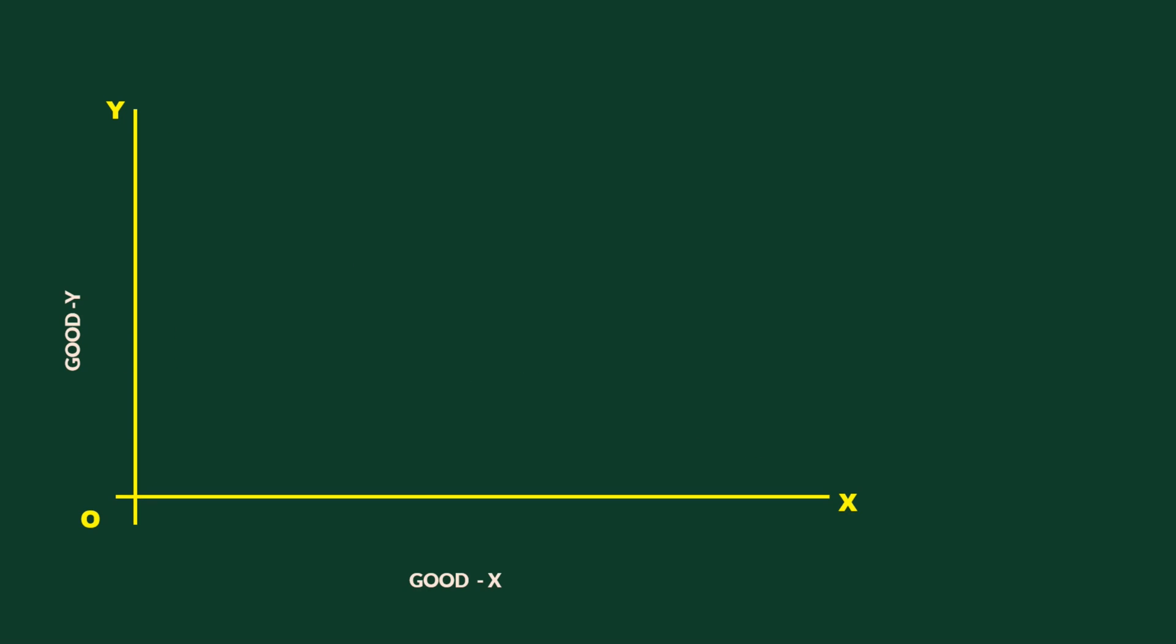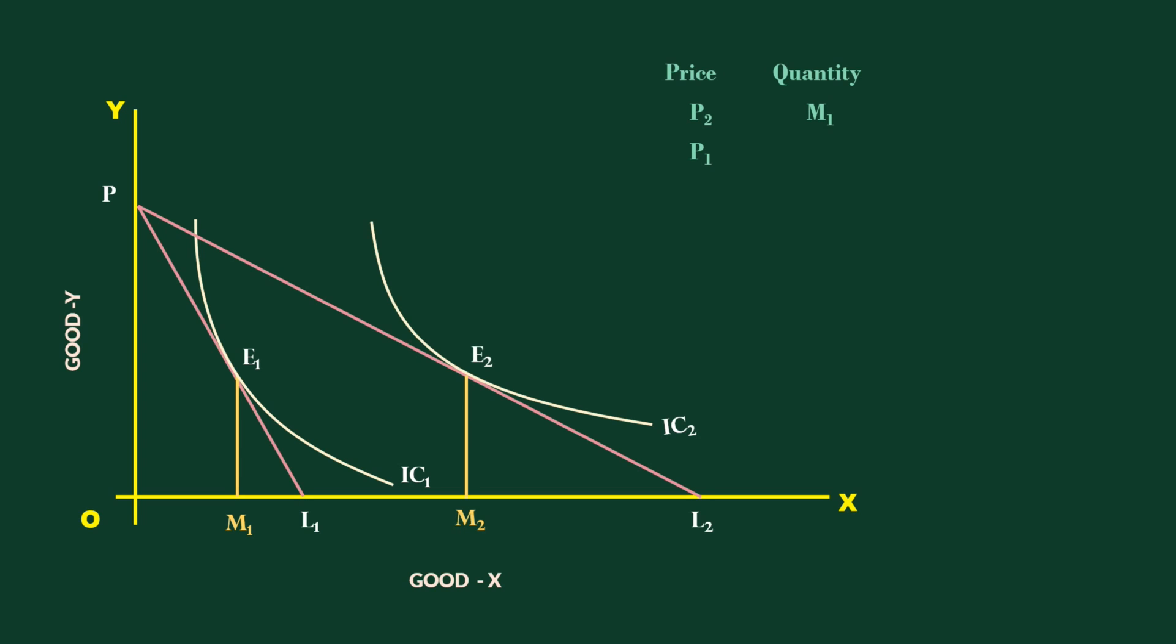Look at this graph. PL1 represents P2 price, a higher price. Consumer buys M1 quantity of good X. The price falls to P1. The new price line is PL2. The consumer buys M2 units of good X. It is tabulated.